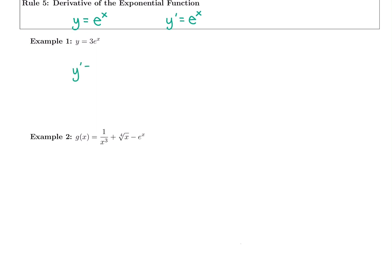So in this first example, we have 3e to the x. We have a constant multiple. We're going to keep that constant multiple, 3. But it doesn't change how we take the derivative. The derivative of e to the x is e to the x. So we kept the constant multiple. Derivative of e to the x is always e to the x.